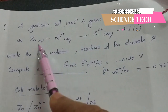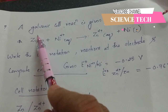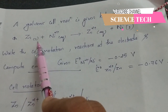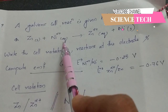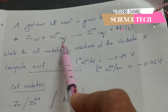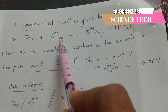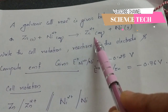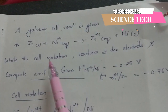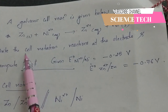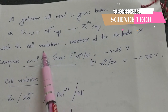I am using this solid and aqueous. Ni2+ is not a solid state — it is in aqueous form. Zn2+ is also in aqueous form. Nickel is in solid state. What we will do is write the cell notation.